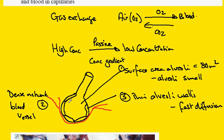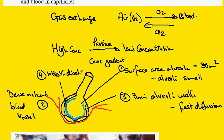The fourth feature is that the inside wall of the alveoli is moist. This allows the gases to dissolve more easily and accelerates diffusion.